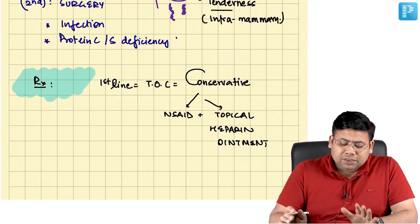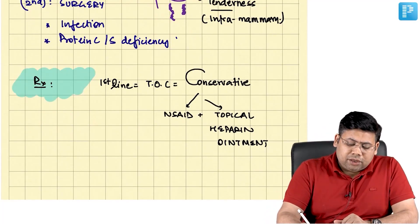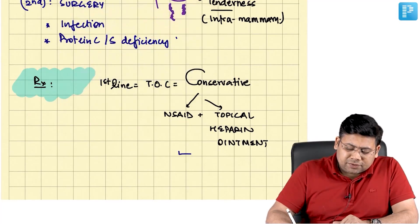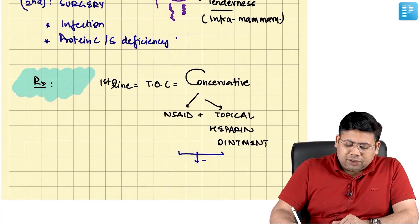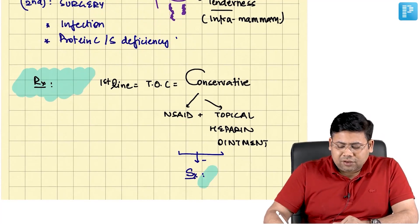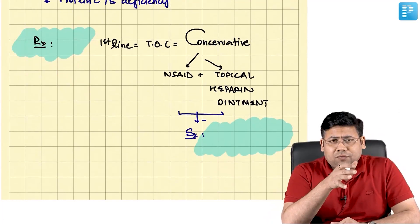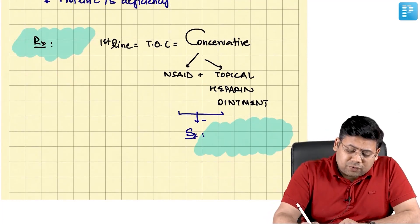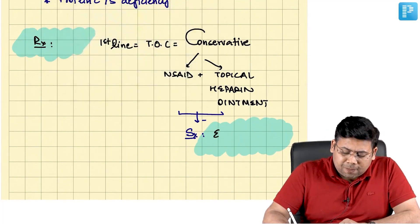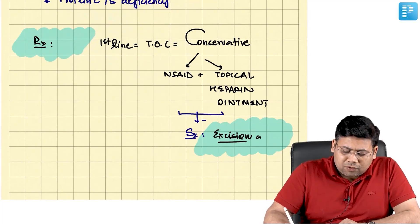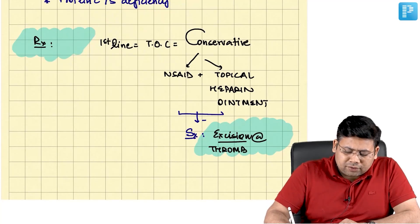If conservative management fails, then you have to go for surgery. The classic surgery is excision of the thrombosed veins.